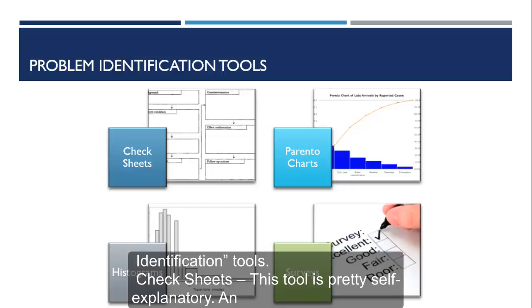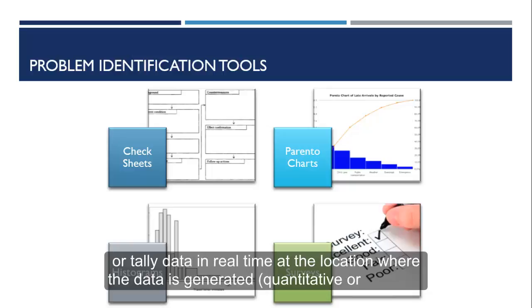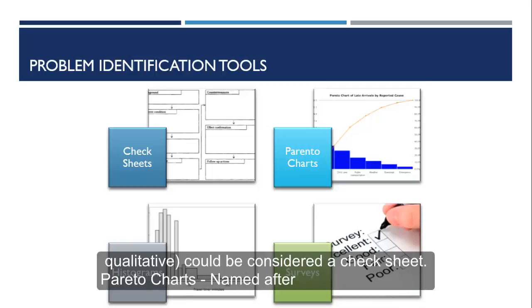Check sheets. This tool is pretty self-explanatory. An observation form may be one type of check sheet. Basically, almost any form used to collect or tally data in real time at a location where the data is generated, quantitative or qualitative, could be considered a check sheet.